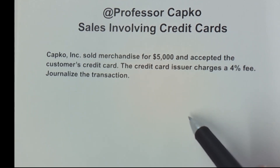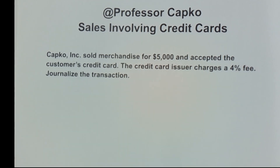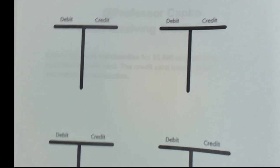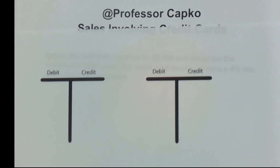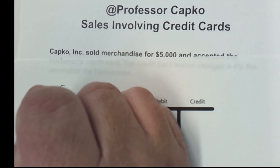It could also be for services as well. I'm going to show you exactly how to journalize that and put it into the general journal. To do that, I like to use some T-accounts to set it up first. I believe the easiest way to handle transactions like this is to first set it up in T-accounts. We've got a couple of accounts to deal with — we certainly are going to deal with the cash account.